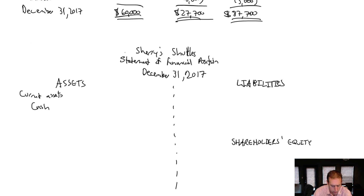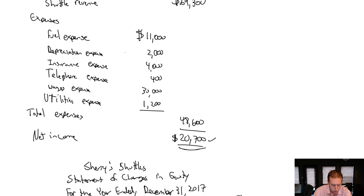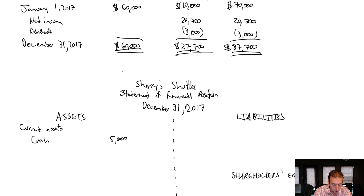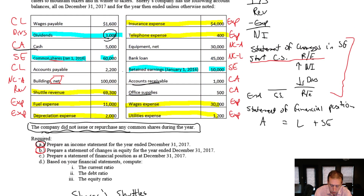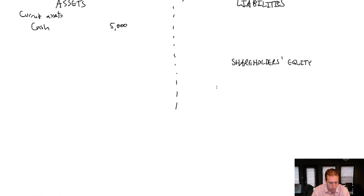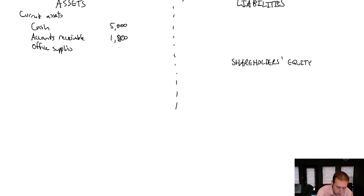Our cash was $5,000. I'm leaving room to do two columns here. The other two current assets are accounts receivable and office supplies. Accounts receivable generally comes before office supplies — if accounts receivable will be collected in 30 days, we may or may not go through all our office supplies in that time. As I recall, they were $1,000 and $500, giving us total current assets of $6,500.